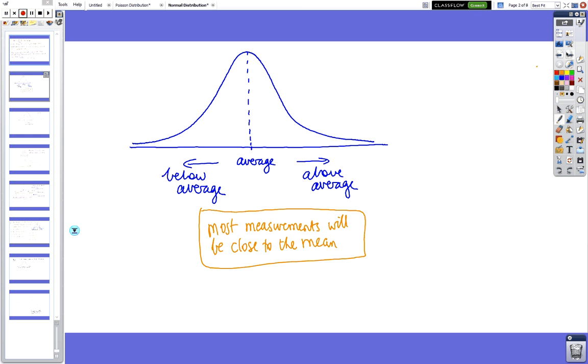So what's happening with the bell curve is at the middle, the highest part is the average. The average, the mode, and the median are all the same things in the bell curve. So the middle, the median, mode, most common, and the average are all at this value here.